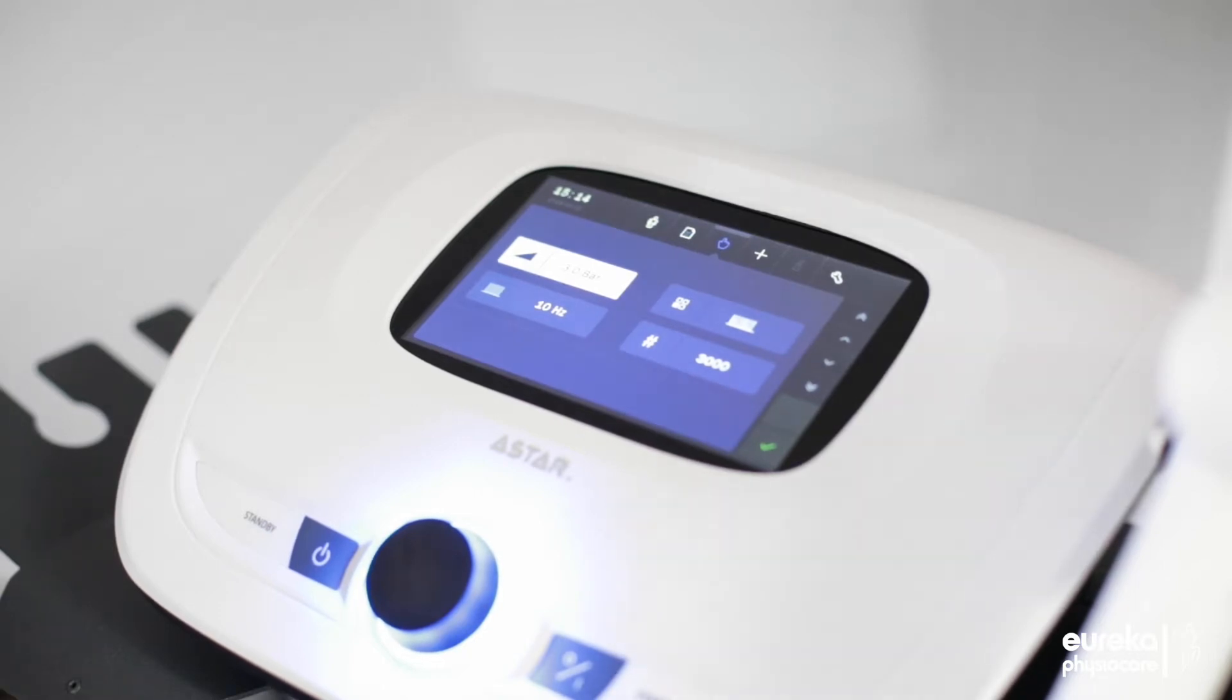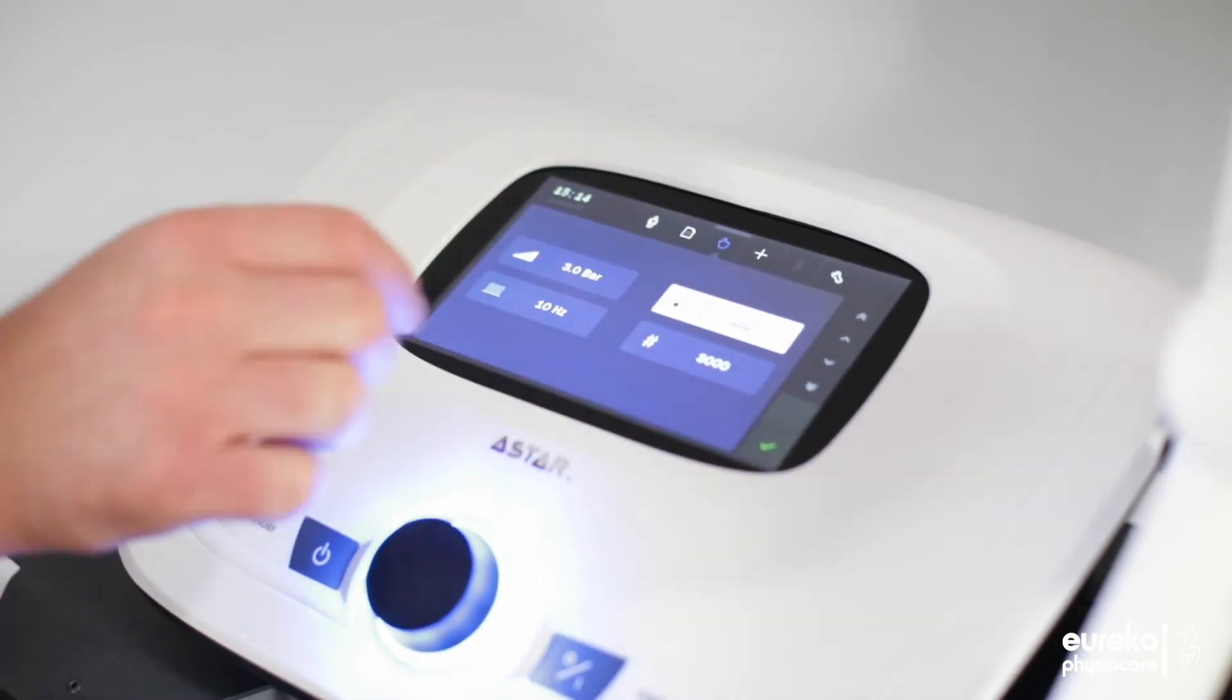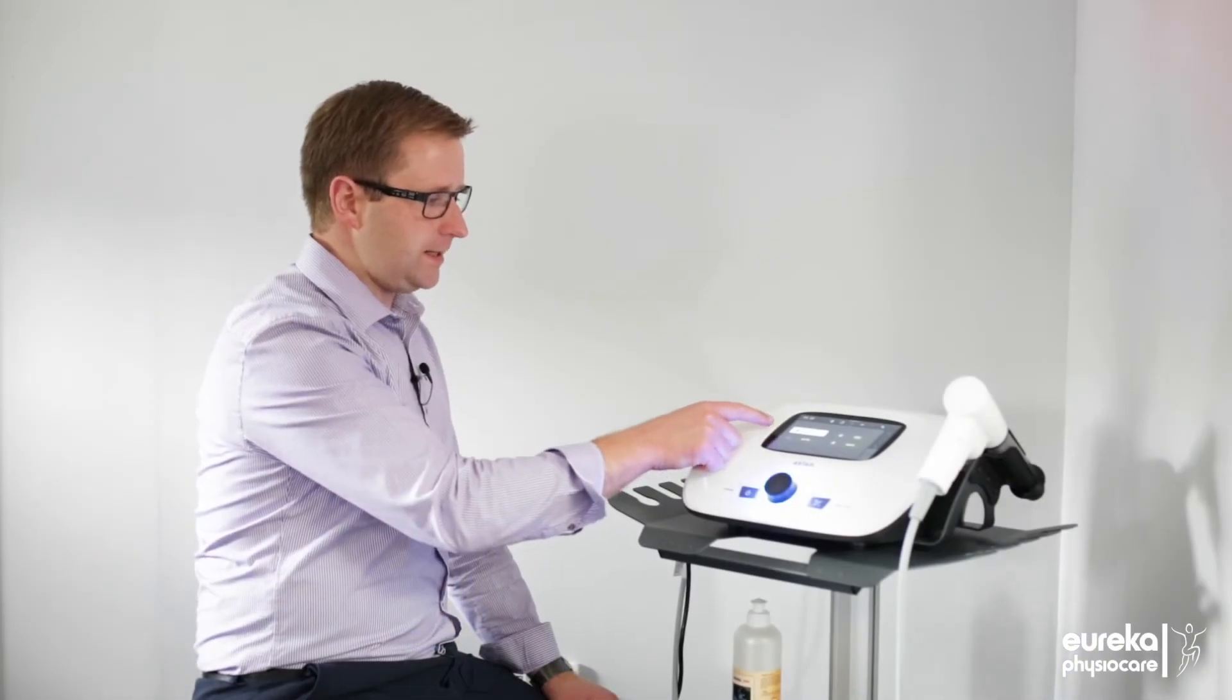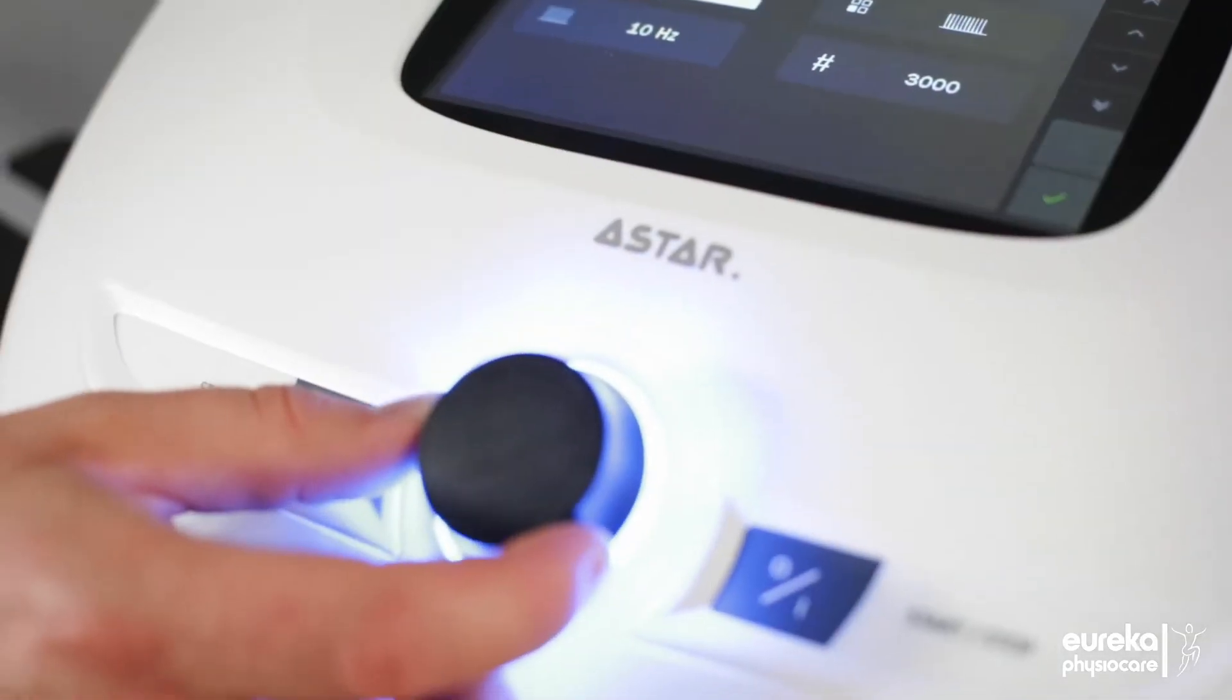This here is your home screen where you have the manual mode showing the bar pressure, the frequency, the number of shocks, and the pulse emission mode. Each of those can be adjusted independently by selecting them and turning the dial up or down.